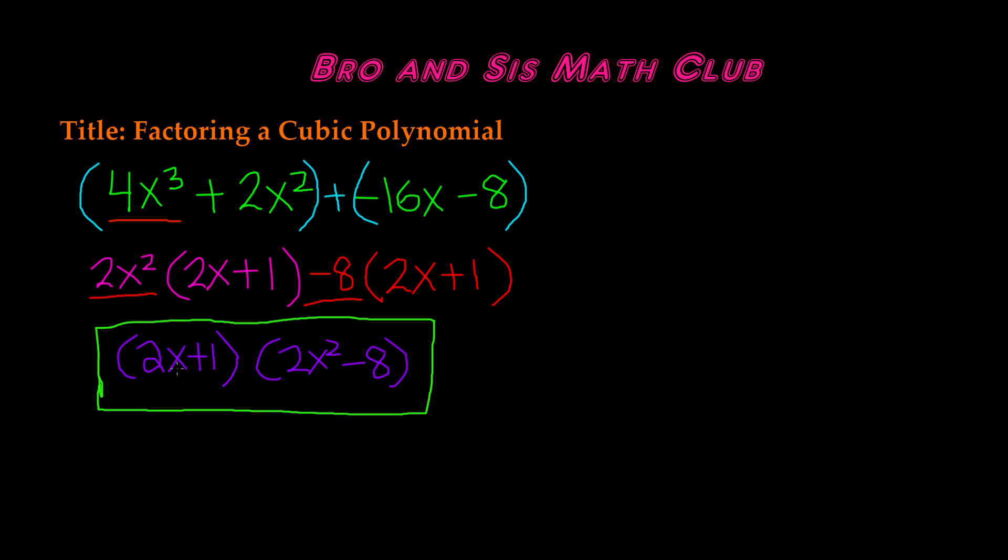So this is our solution, (2x + 1)(2x² - 8). And remember, when you multiply these two binomials, you should get 4x³ + 2x² - 16x - 8. So this is how you factor a cubic polynomial.